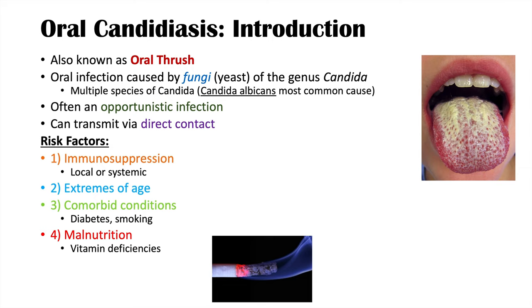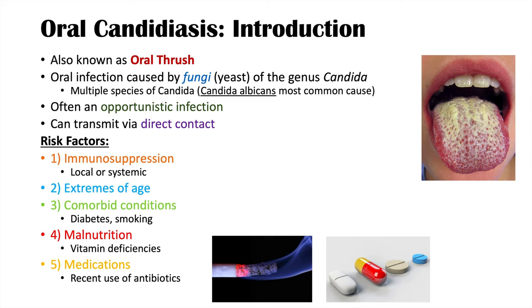Another medication risk factor is recent use of antibiotics. Antibiotics can increase risk for oral thrush because normal commensal bacteria in the mouth compete with Candida, keeping it from growing out of control. When antibiotics reduce those bacterial populations, Candida can grow disproportionately. The sixth risk factor is denture use, which is particularly relevant in older populations who may already have multiple other risk factors.